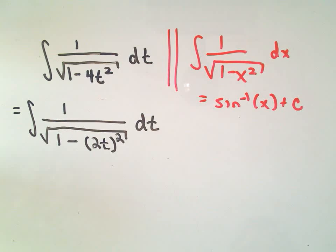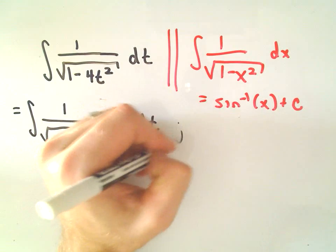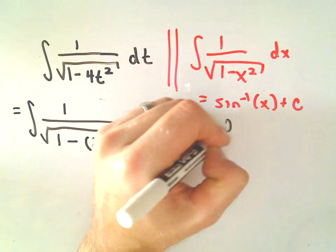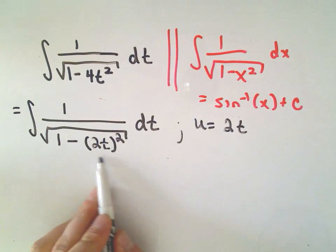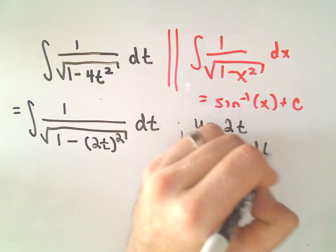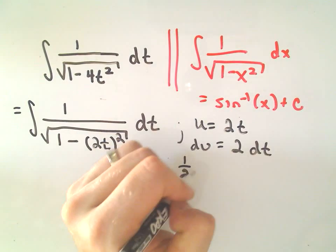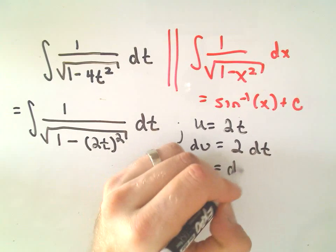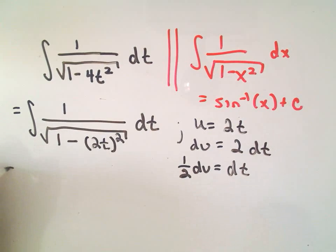So, what we're going to do at this point is, this is where the u substitution comes into it. We'll simply let u equal 2t, what's inside the parentheses. So, du would be 2 dt, divide both sides by 2, we'll get 1 half du equals dt.